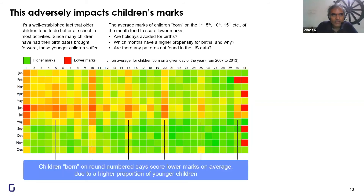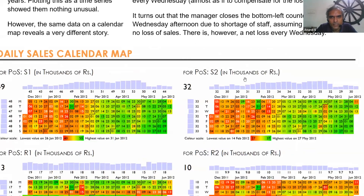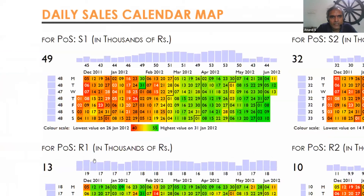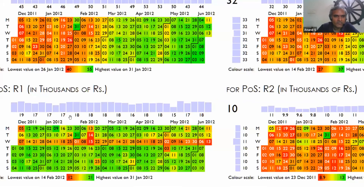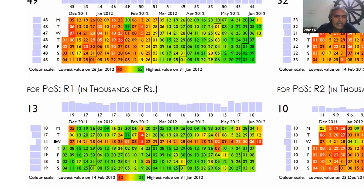Let me tell you about a restaurant. They had point-of-sale data and asked what we could tell them. We looked at one restaurant in their chain, which had four point-of-sale terminals — two at the front counter and two at the back. The visualization shows sales where green is high and red is low, on a calendar from December 1st, 2011 to June 13th, 2012, organized by week from Monday to Sunday.